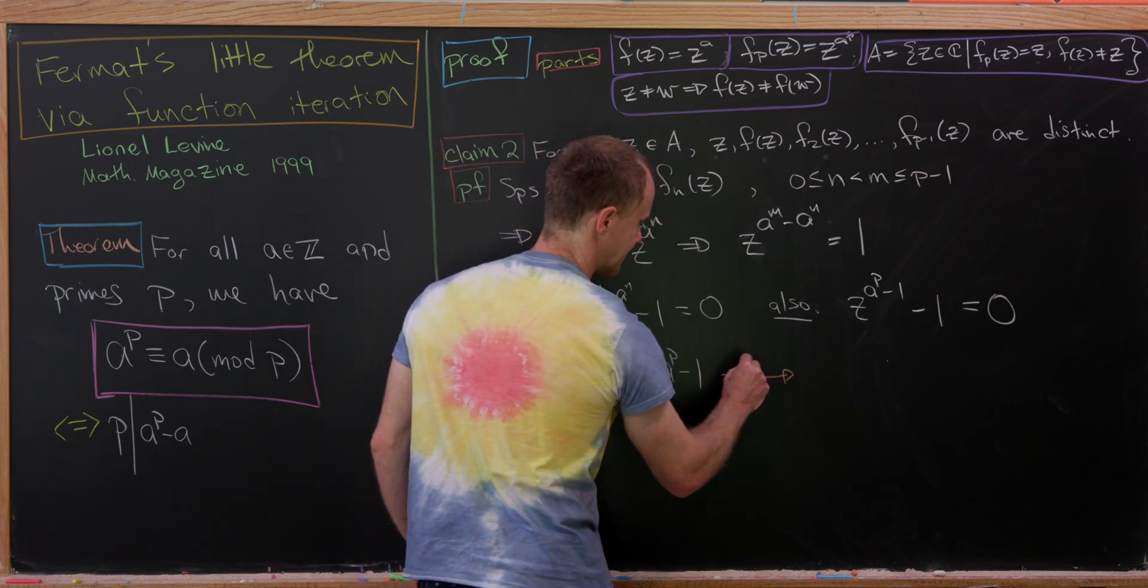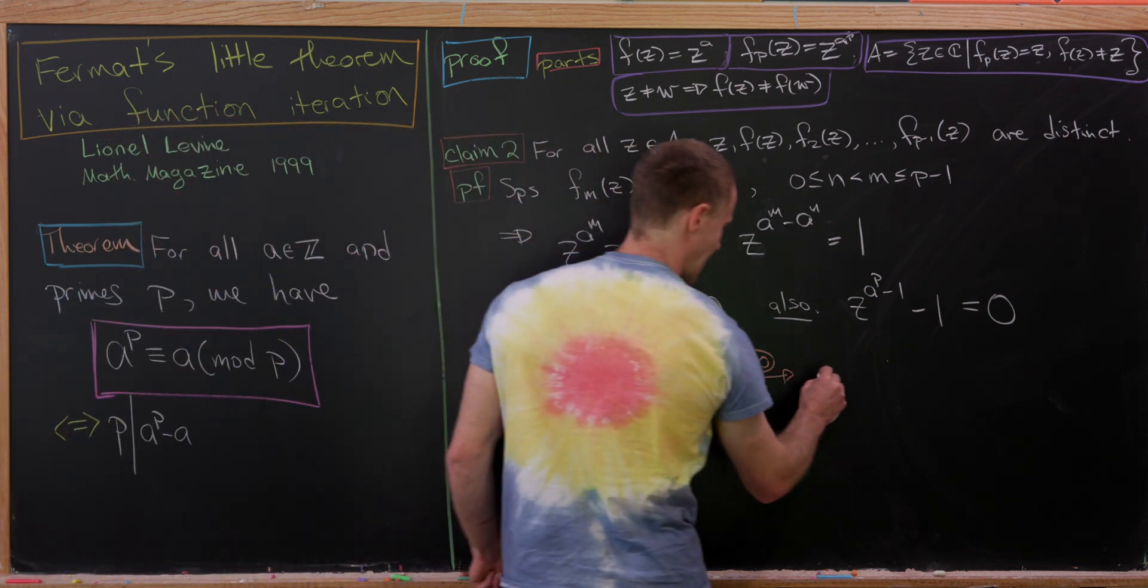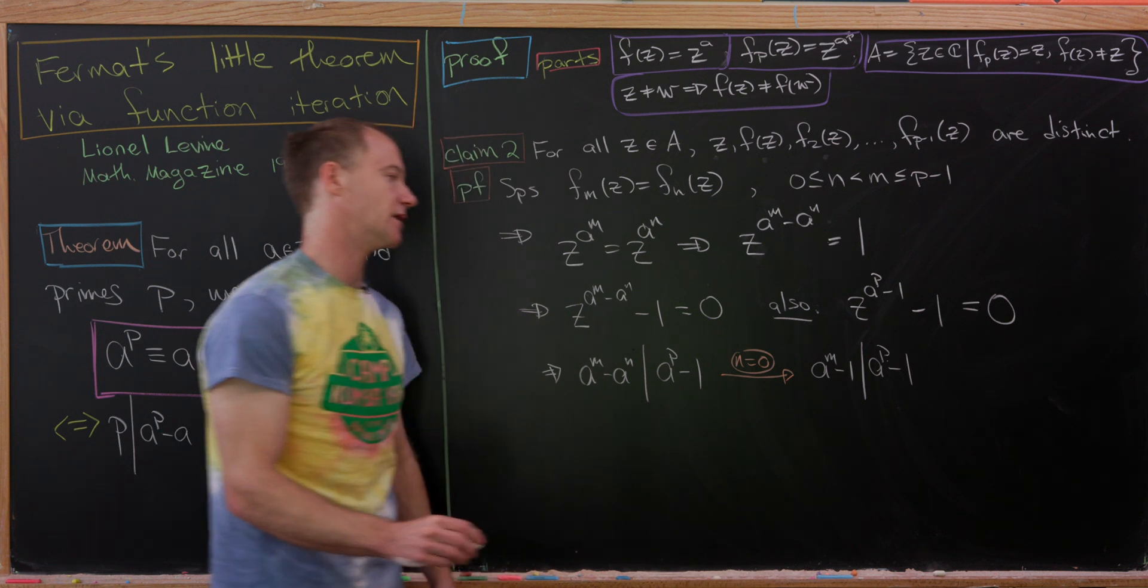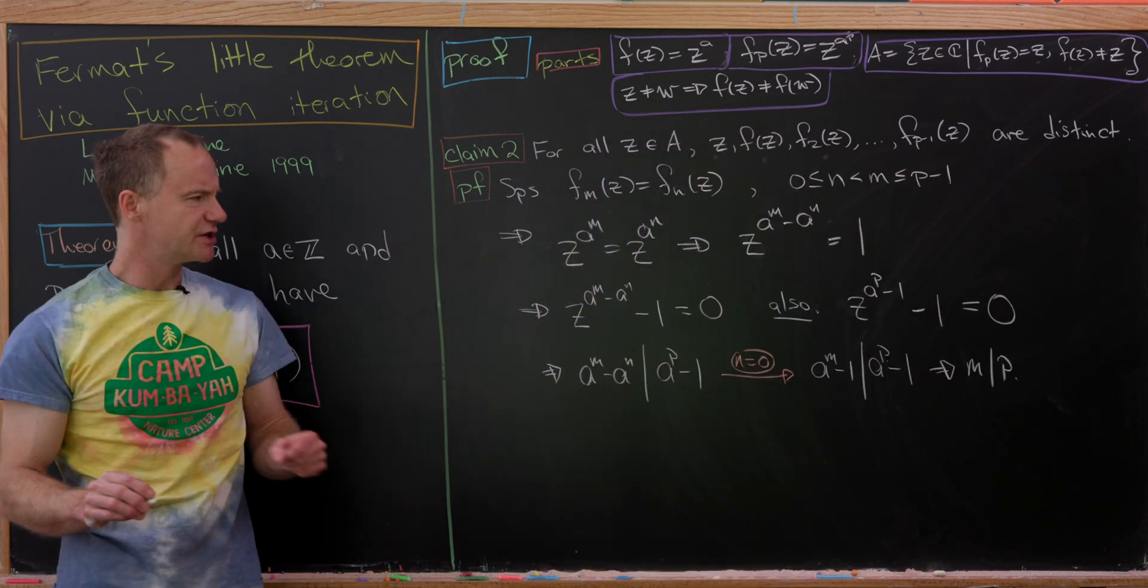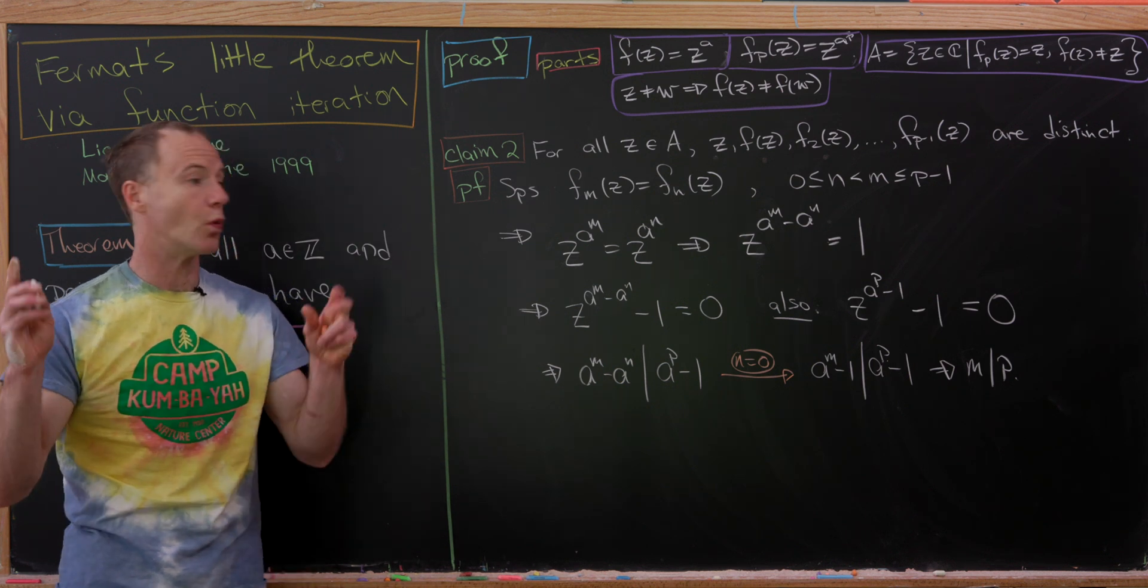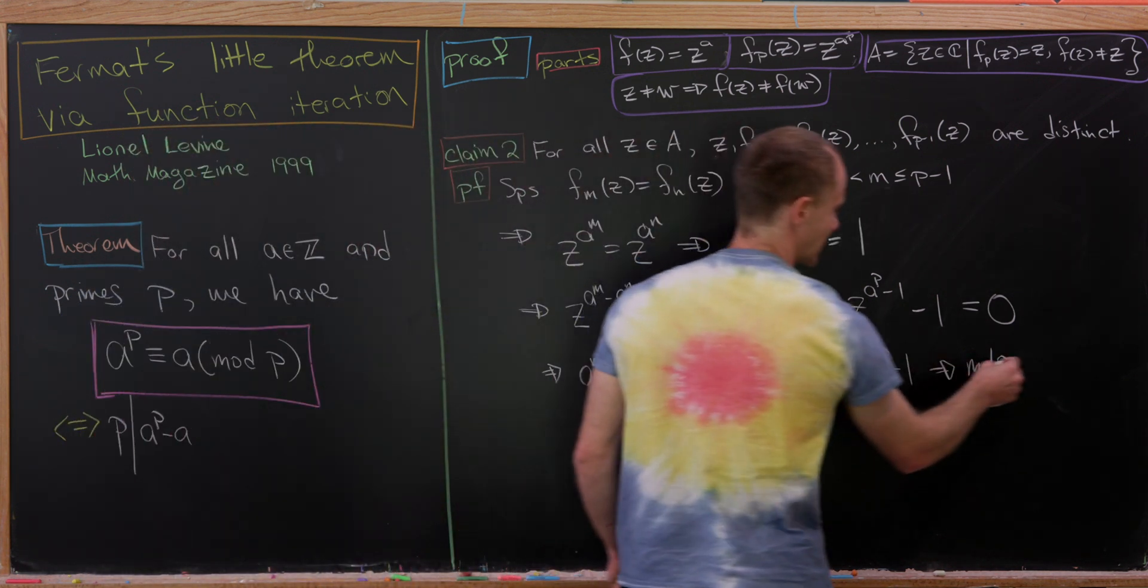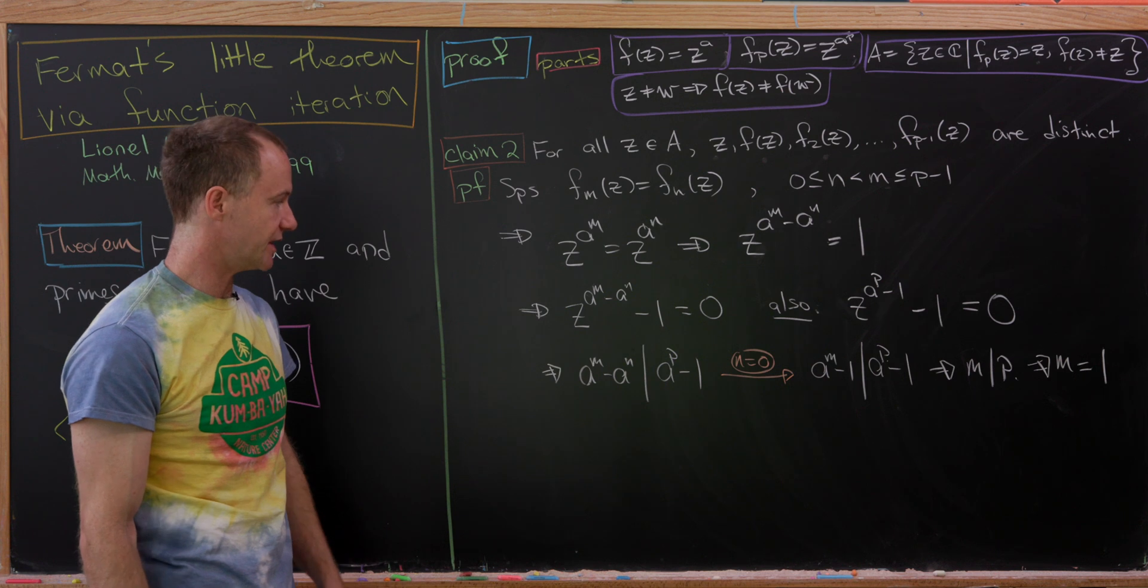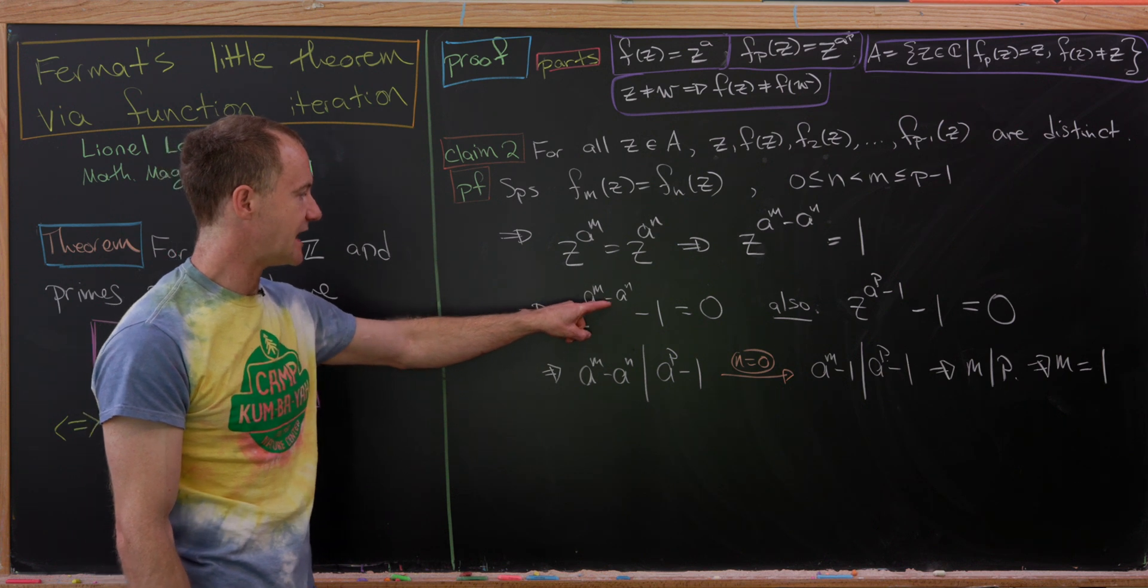Notice that the degree of this polynomial right here is smaller than the degree of this polynomial right here. But since Z is a root of both of these polynomials, what does that tell us? Well, that tells us that this exponent right here must divide this exponent right here. So let's write that down. So here we have, that means that A to the M minus A to the N must divide A to the P minus 1. And then that's going to split off into two cases. And our first case will be the case when N is equal to zero. So let's notice if N is equal to zero, that's going to collapse to A sub M minus 1 divides A sub P minus 1.